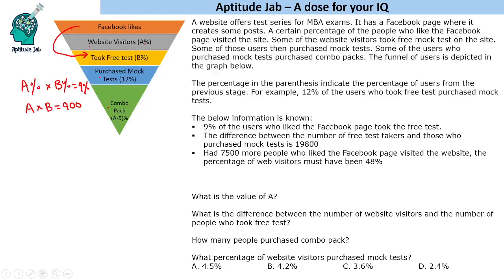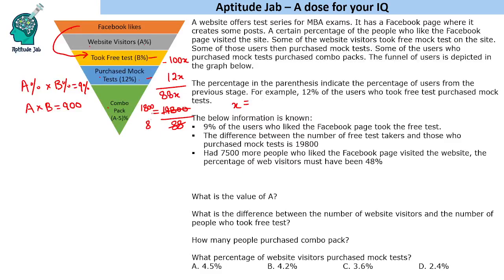The difference between the number of free test takers and mock test purchasers is 19,800. Let the number of free test takers be 100x; then mock test purchasers are 12x, so the difference is 88x. Setting 88x equal to 19,800 and dividing by 88 gives x = 225. Therefore, the number of free test takers is 22,500.